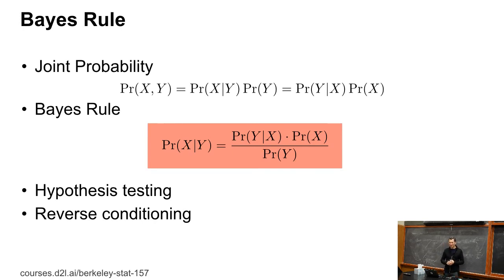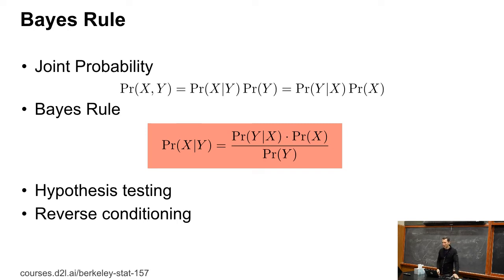Bayes' rule — I guess everybody knows it, so let's do a quick refresher. The way you derive it is: P(X, Y) = P(X|Y) × P(Y), and by symmetry it also has to be P(Y|X) × P(X). Then you just solve for P(X|Y), and you get that this equals P(Y|X) × P(X) divided by P(Y). Sounds pretty boring, but I can use that for hypothesis testing or reverse conditioning.